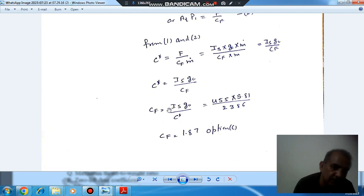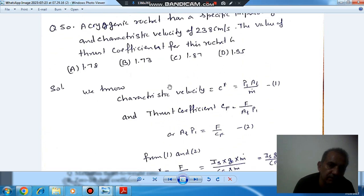Now all these data are given. ISP is 455, C star is given. So G is 9.81. We can calculate Cf, thrust coefficient.